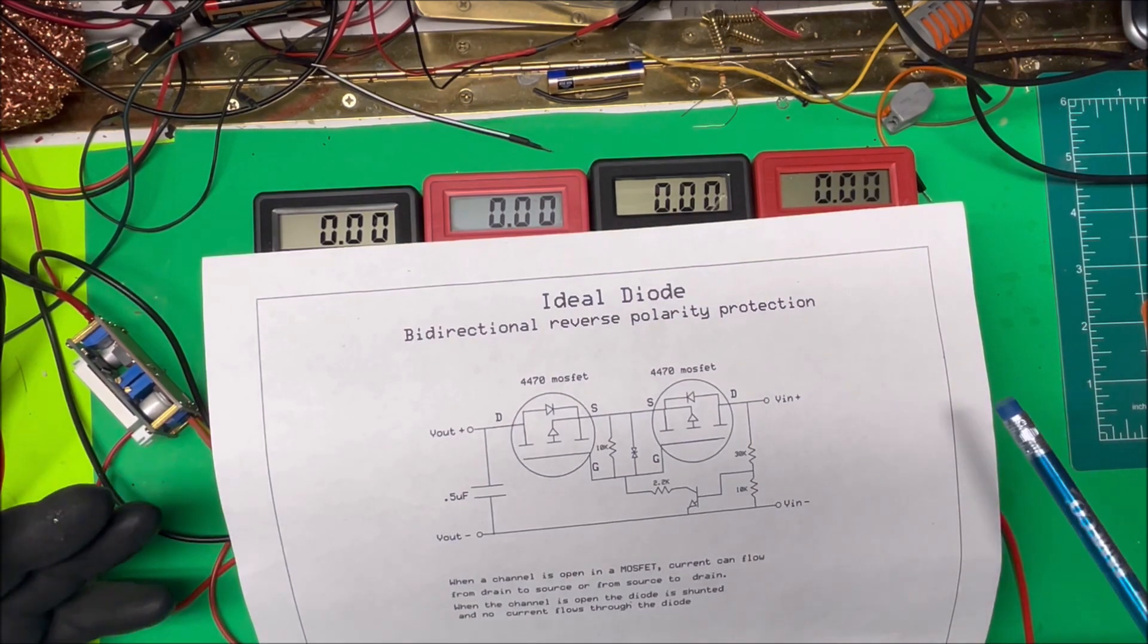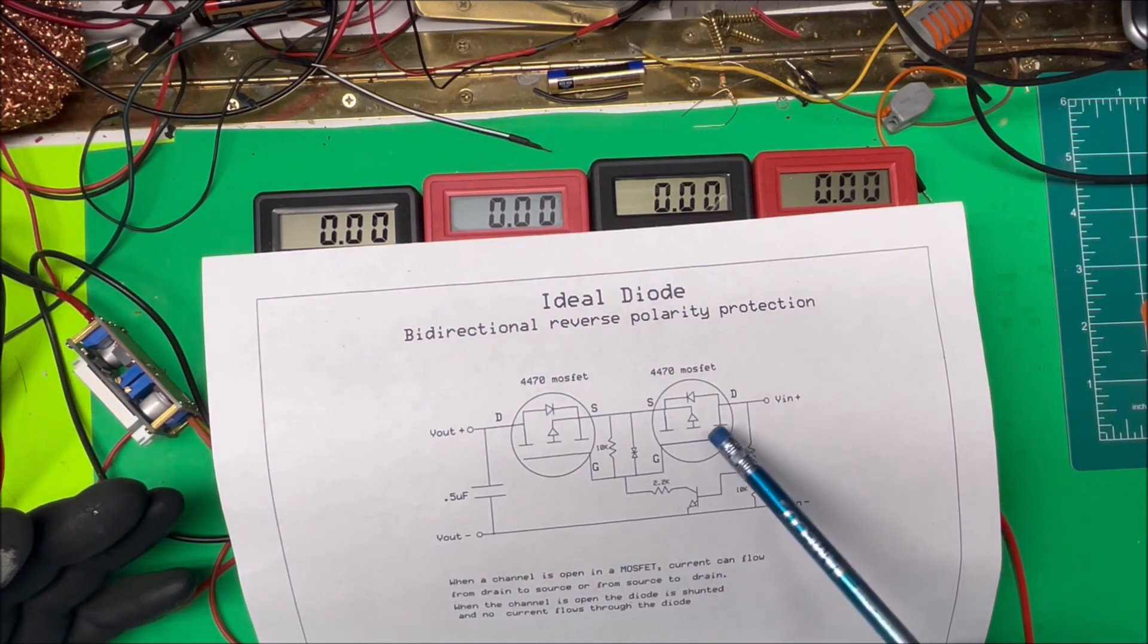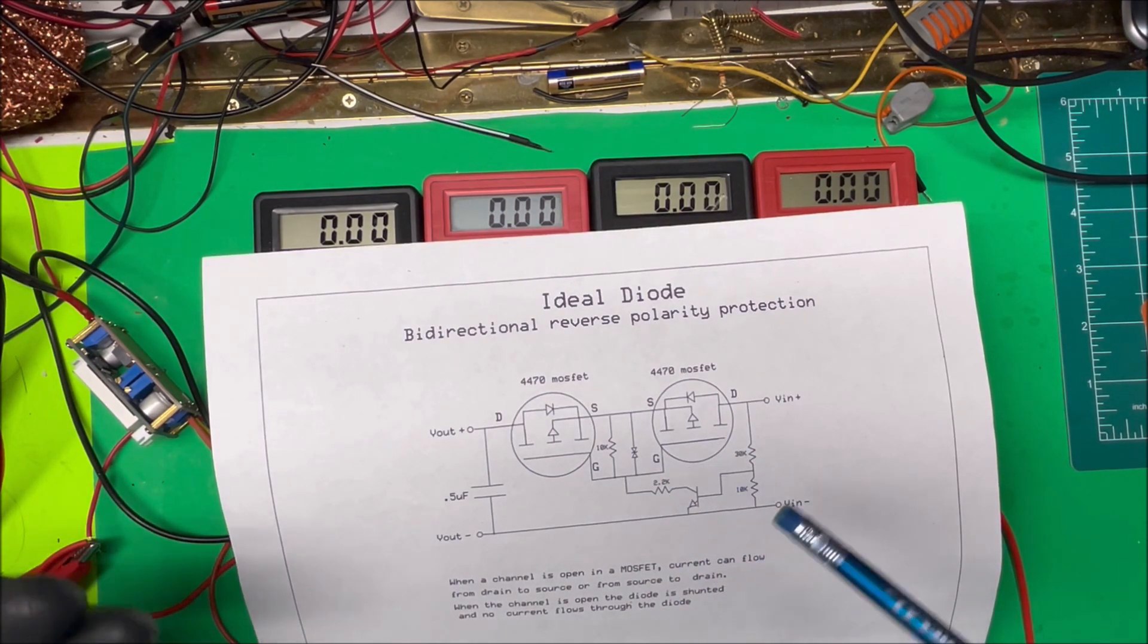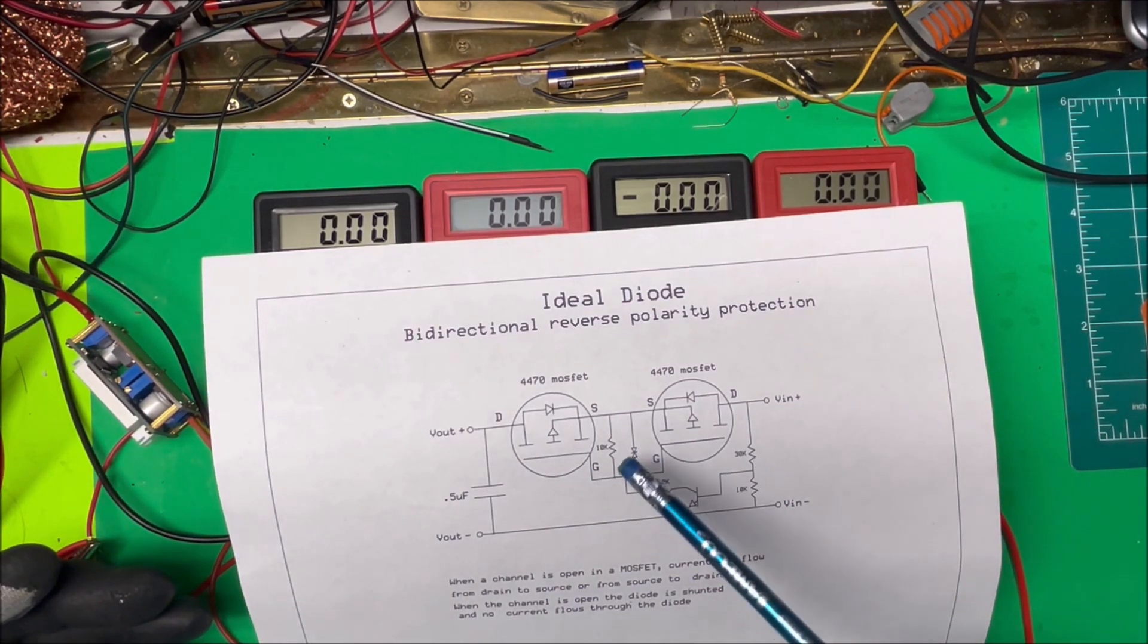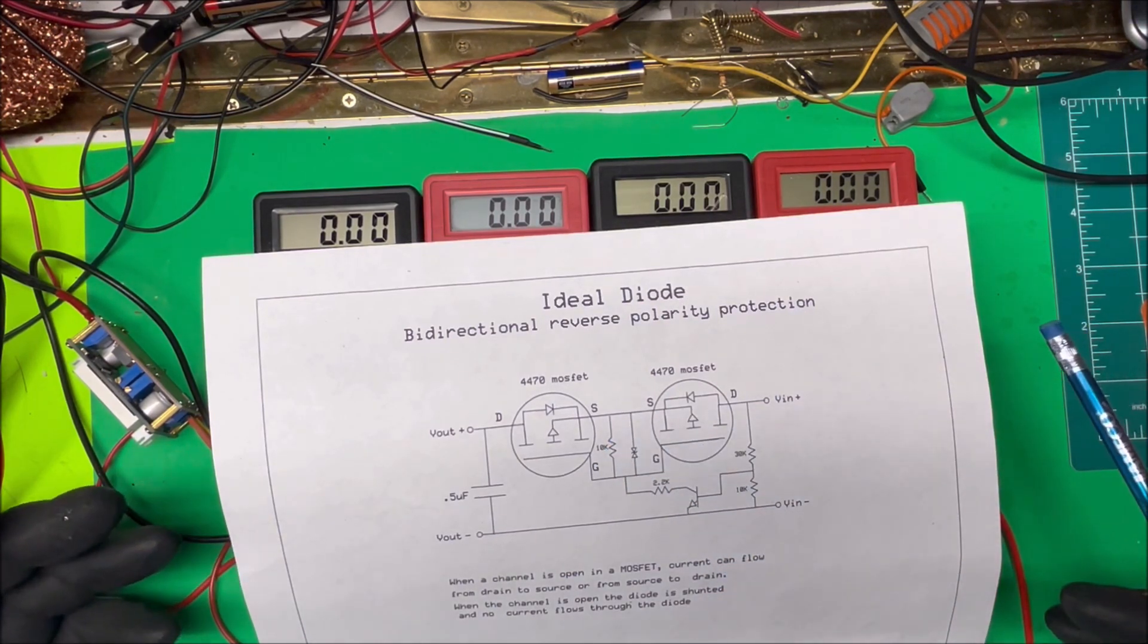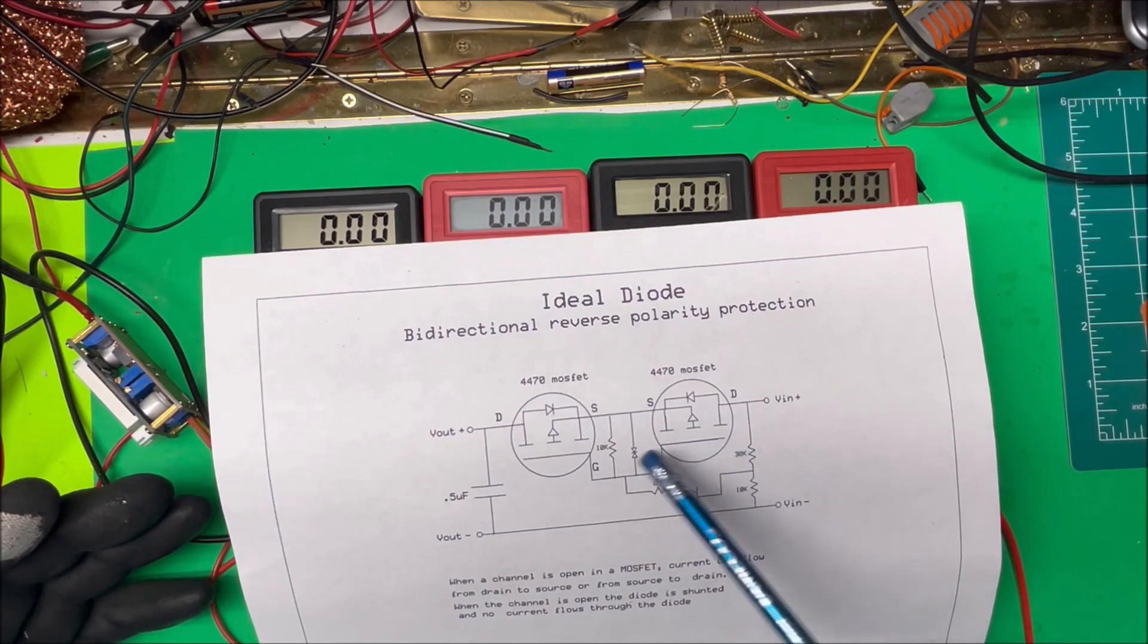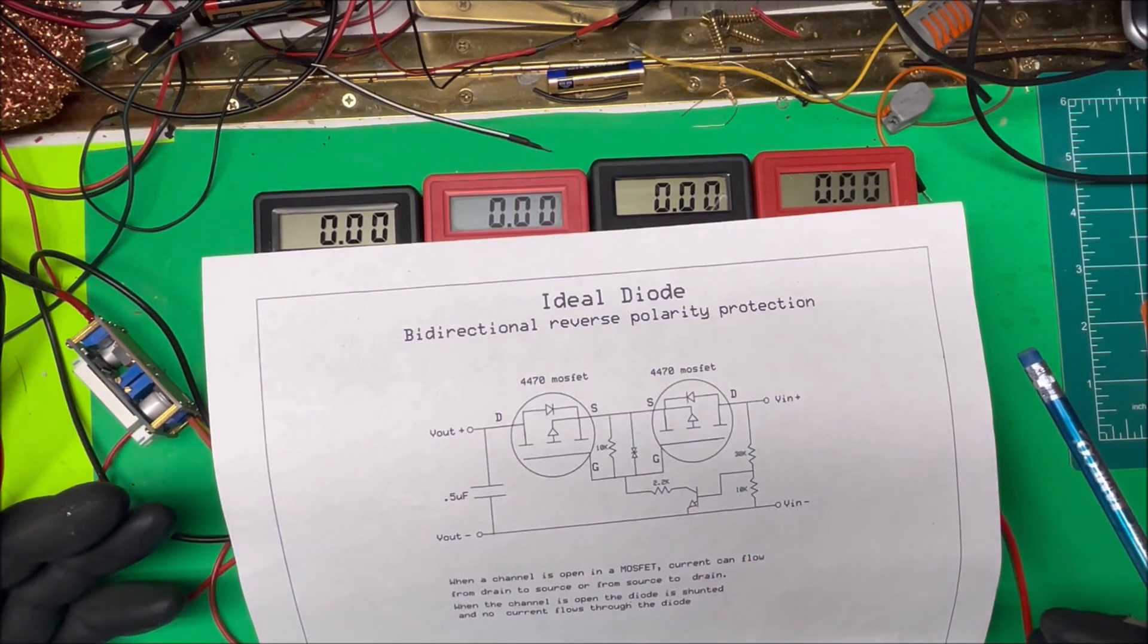Now the problem with this circuit here is that once we turn this thing on and these gates come on, there's a capacitance there and they stay on. They have to drain the capacitance out of these gates to turn off. Now they got a 10k resistor in here but it just doesn't drain it down fast enough. So once we turn these on and we take the power off of here, voltage can come back through there because these gates are still open or the channel's still open there. So that's not working out good.